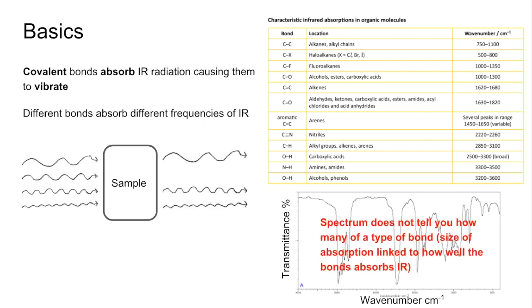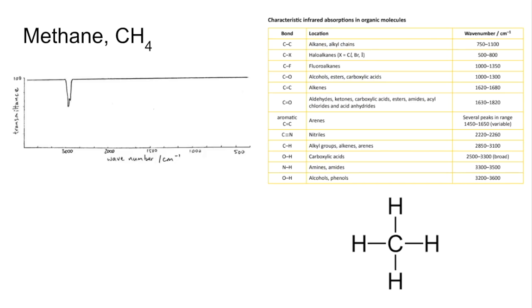The spectrum doesn't tell you how many of a type of bond you've got. The size of the absorption is basically linked to how well that bond absorbs infrared.